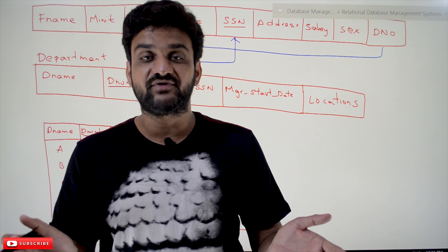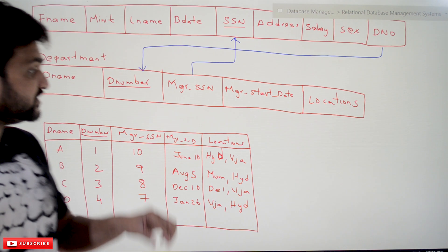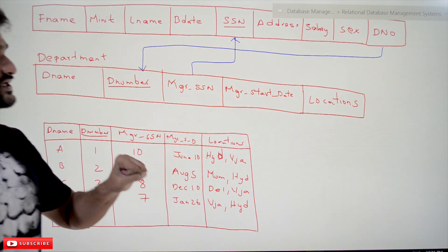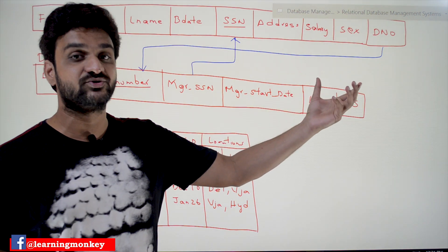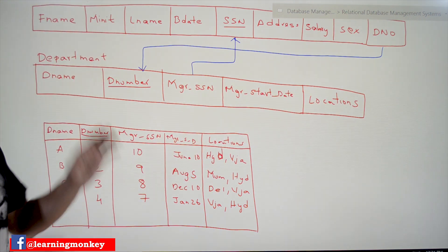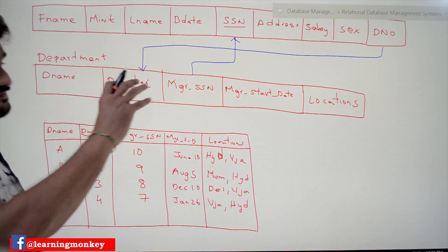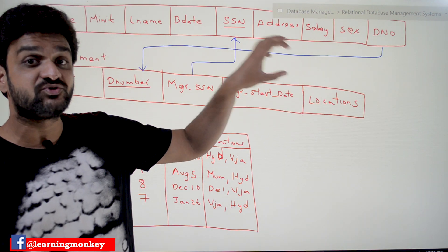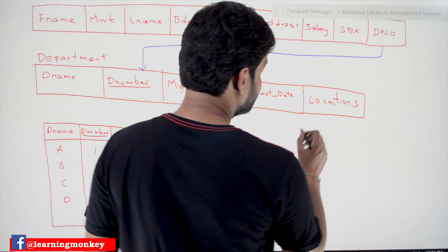Atomic values are values which cannot be further divided — that is the rule of the database. Based on that, we have to change this table. The 'locations' column has to be converted so that it is no longer a multi-valued column in this table. In such cases of multi-valued attributes, what we have to do is bring it out of this table and create a separate table for it.